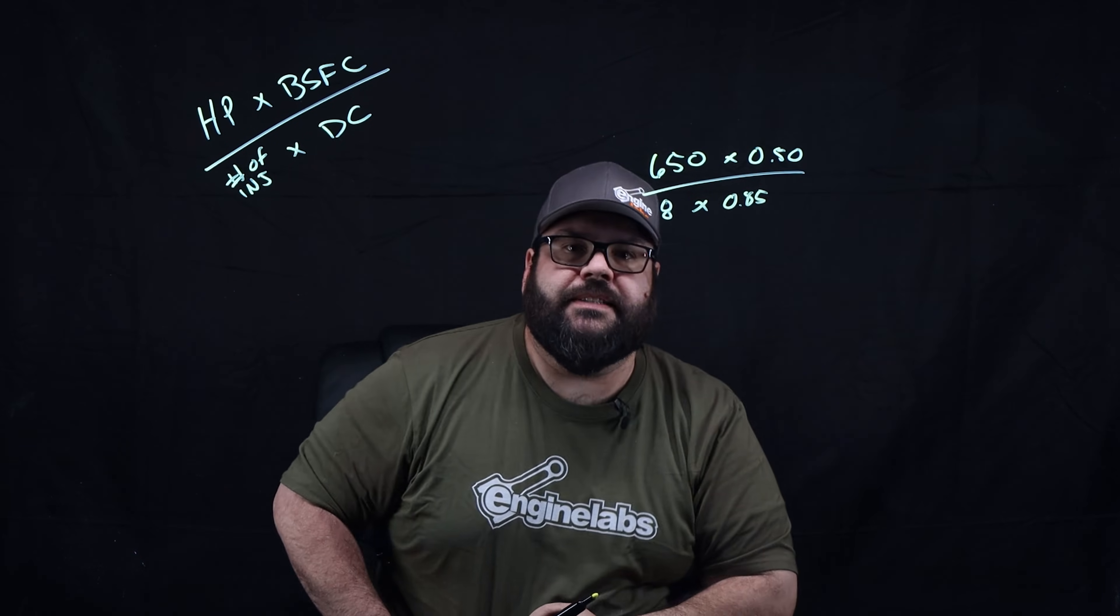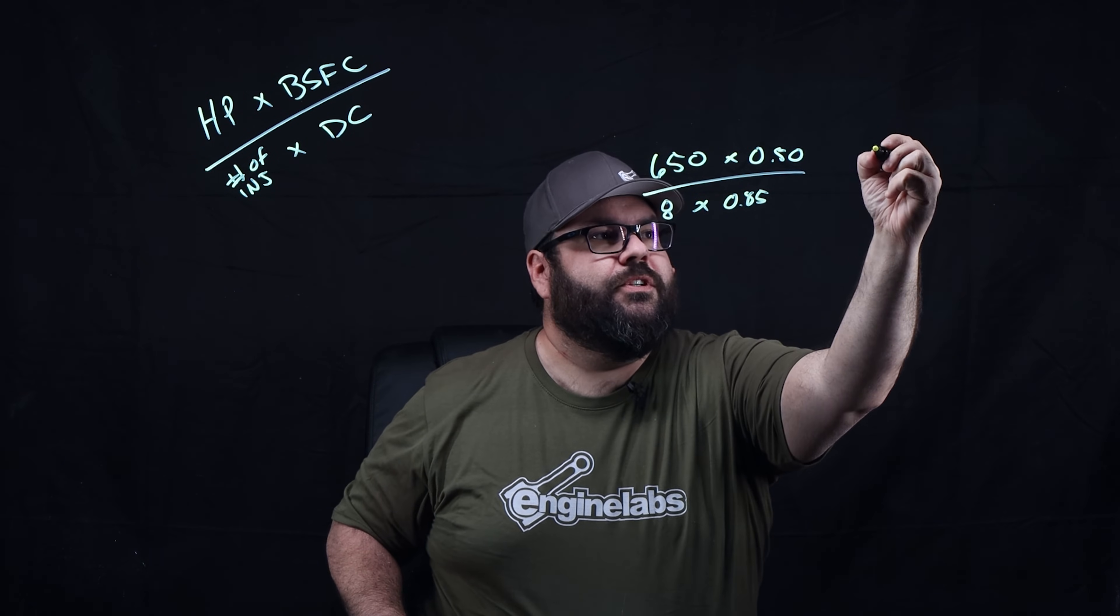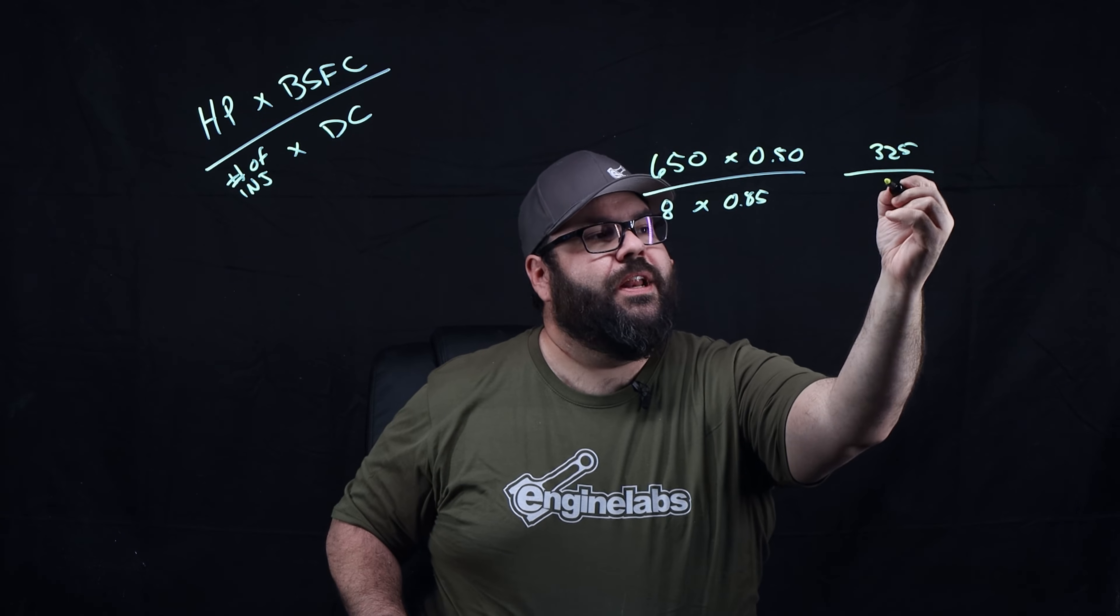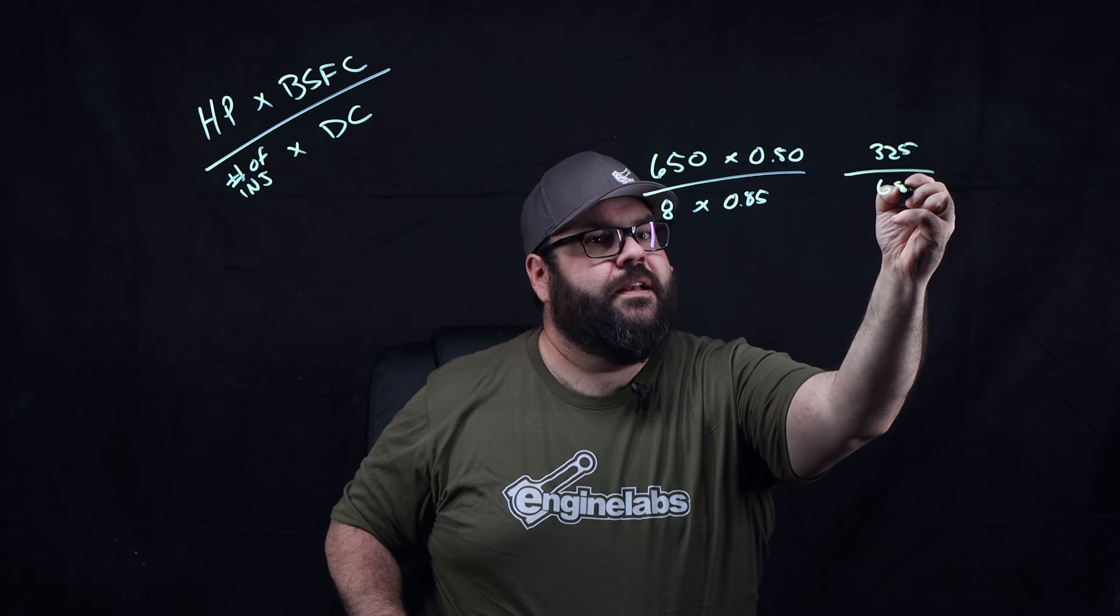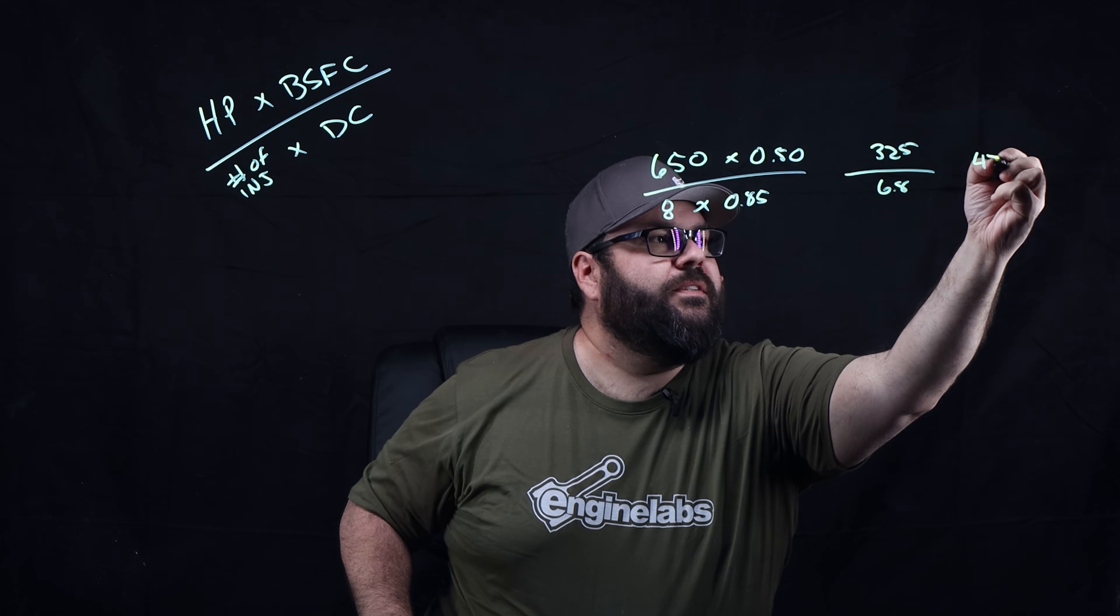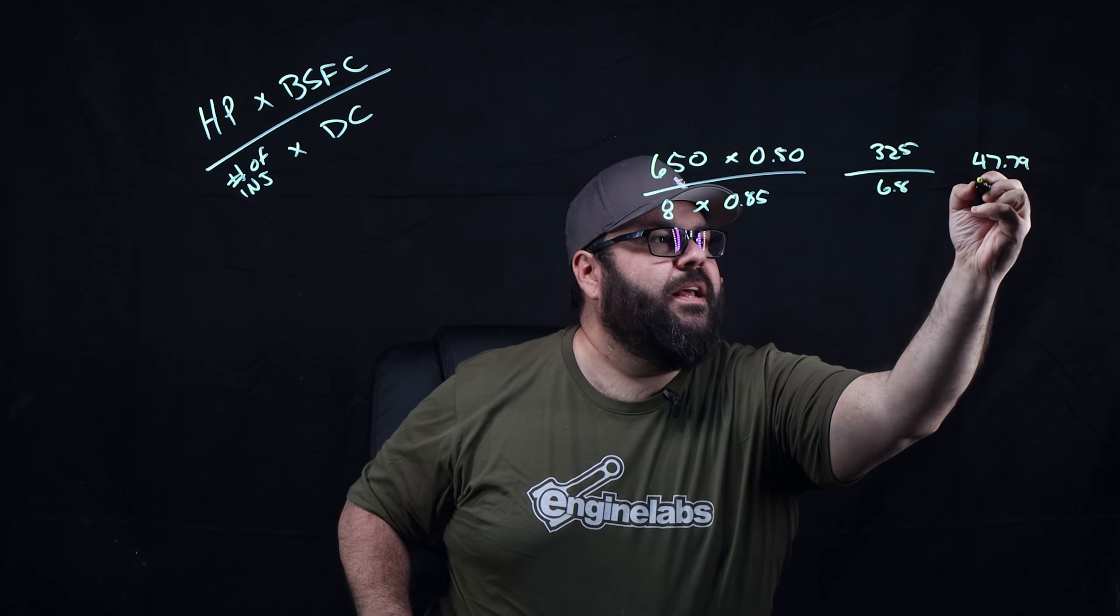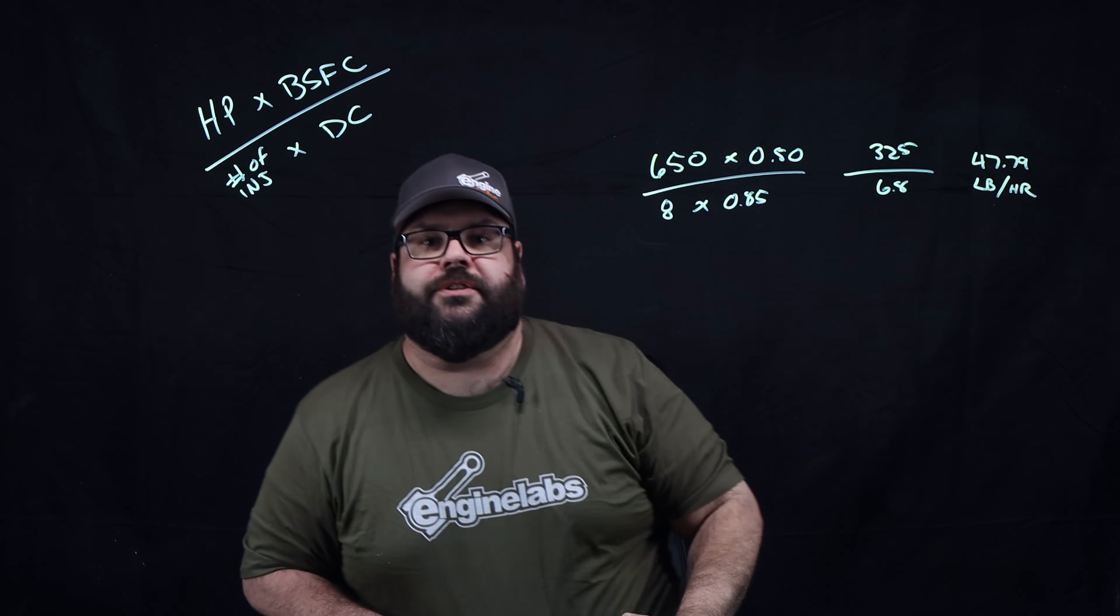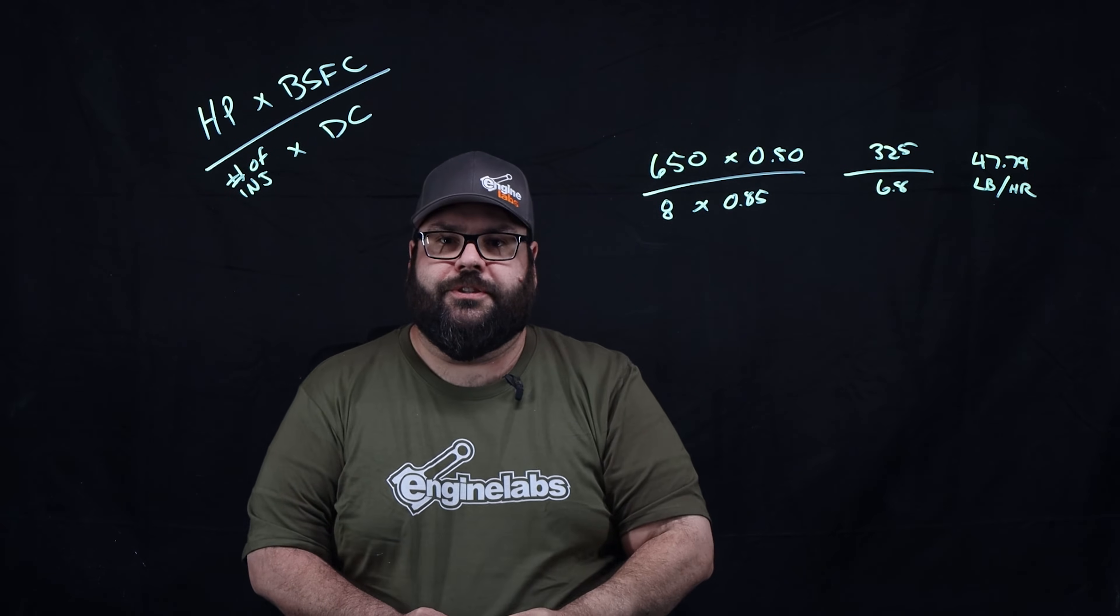So when we crunch these numbers, we get 650 times 0.5, which is 325. Then we get 8 times 0.85, which is 6.8. And then when we divide 325 by 6.8, we get 47.79 pounds per hour fuel injectors that we need to feed our 650 horsepower engine.